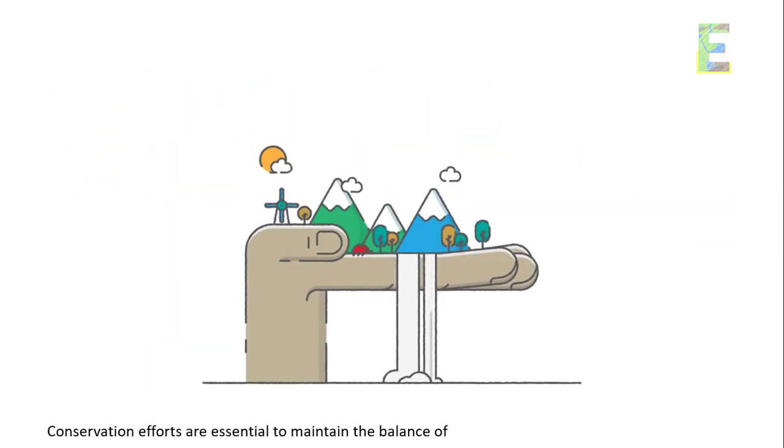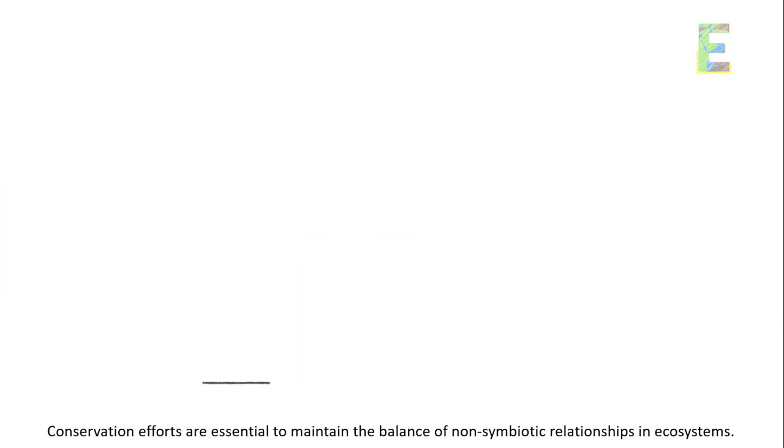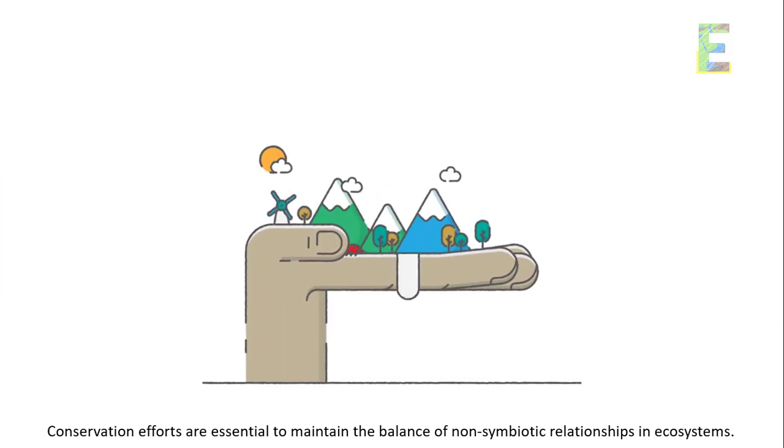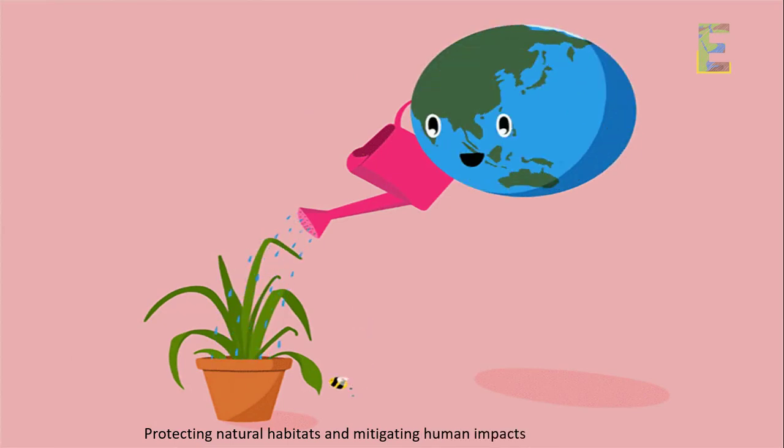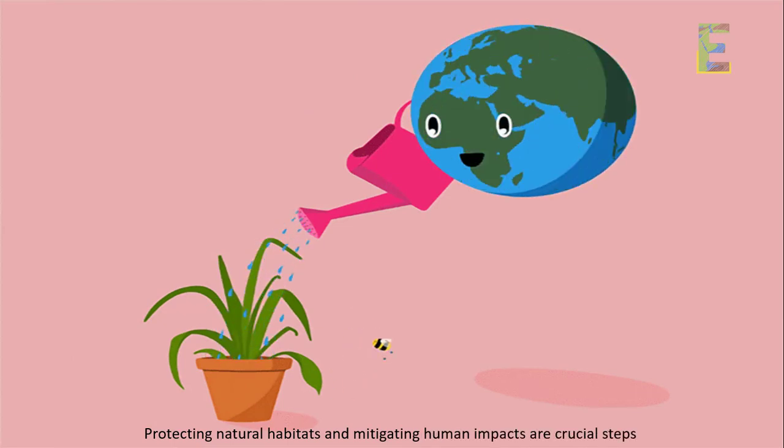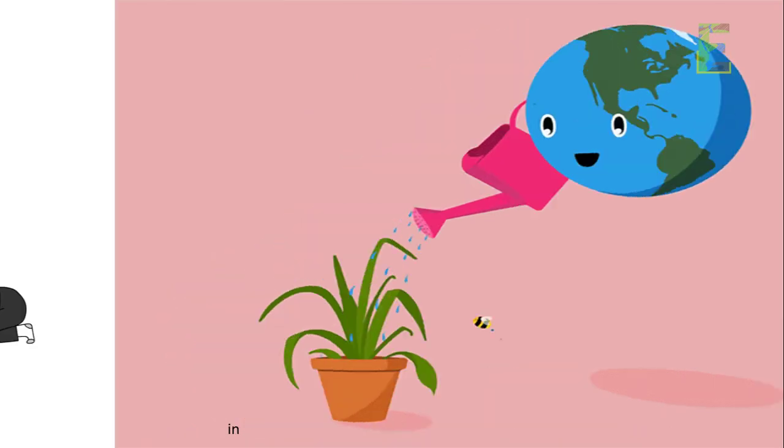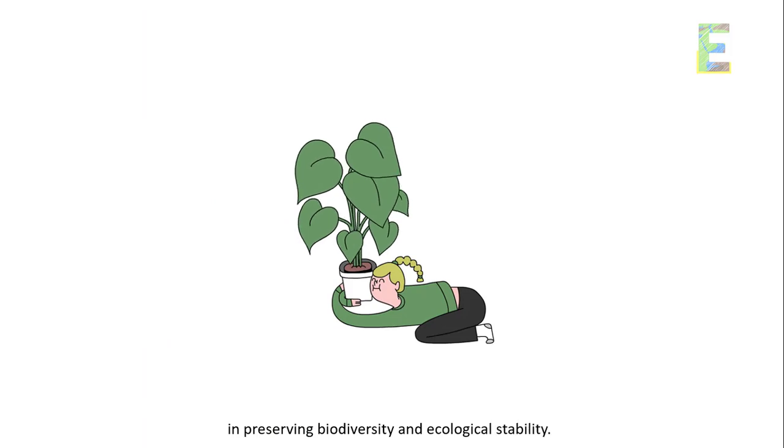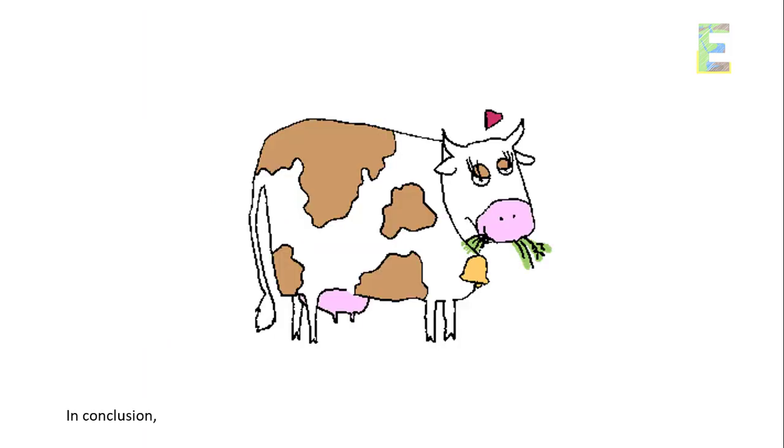Conservation. Conservation efforts are essential to maintain the balance of non-symbiotic relationships in ecosystems. Protecting natural habitats and mitigating human impacts are crucial steps in preserving biodiversity and ecological stability.